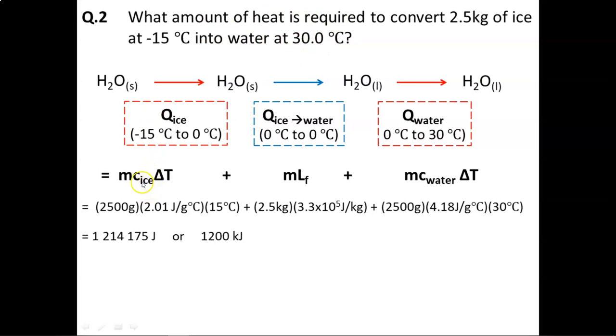You'll notice that the heat capacity of ice is 2.01 joules per gram degree Celsius, whereas water is 4.18. So the heat capacity for ice versus water are different. They're the same substance, but they're not in the same state. So ice is able to absorb energy differently than if it was in its liquid state.